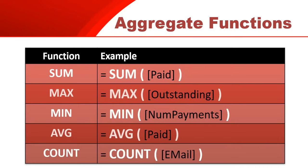And then there's also Count, where you can count how many records there are — for example, count all the emails. Because you're counting all the records, you don't actually need to specify a particular field; you can just use a star. So when you use Count, you can say Count(*) to count all the records, and that will work.